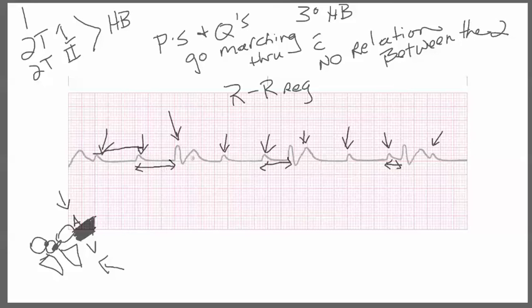We look at this and none of that matches, but if you measure your P to P you will see that they march out. So in this instance you have the R-R that's regular and you also have the P-P that's regular.